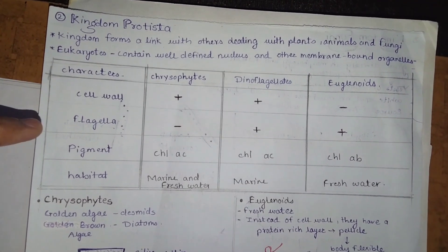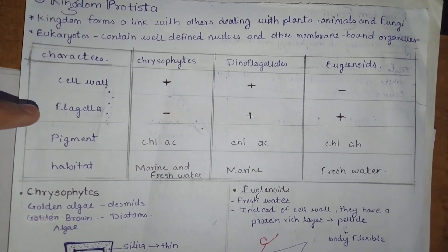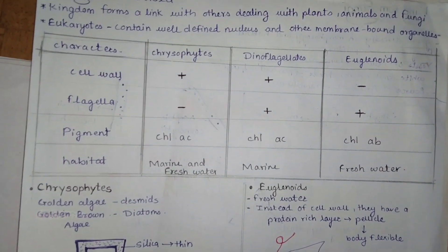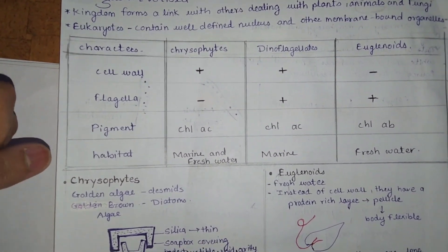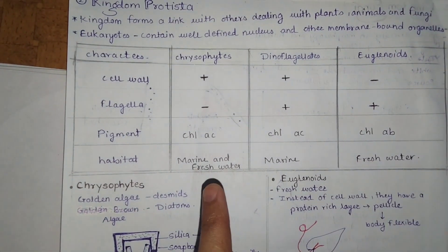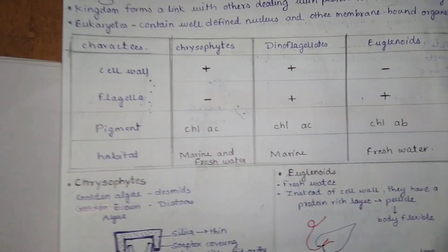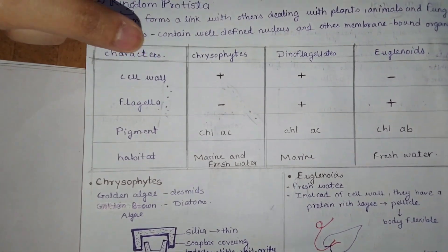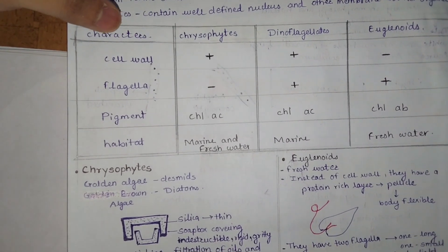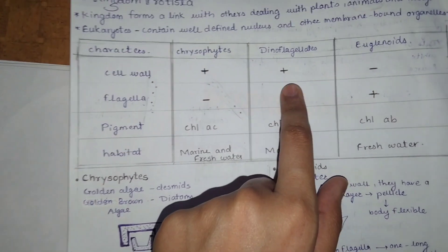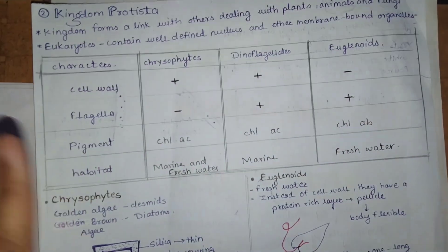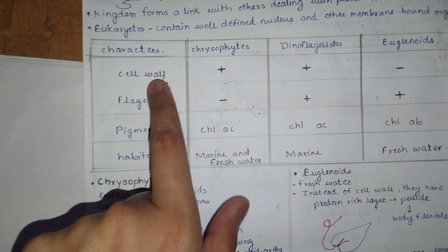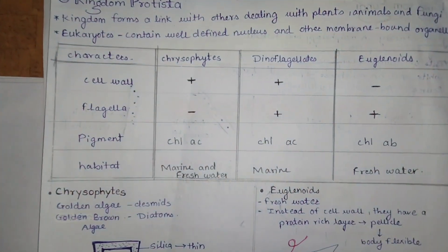First, cell wall. In the table, when I have written plus, it denotes the organism has a cell wall. When I have written minus, it denotes it is devoid of a cell wall. Chrysophytes and Dinoflagellates have a cell wall. In Euglenoids, there is no cell wall present.